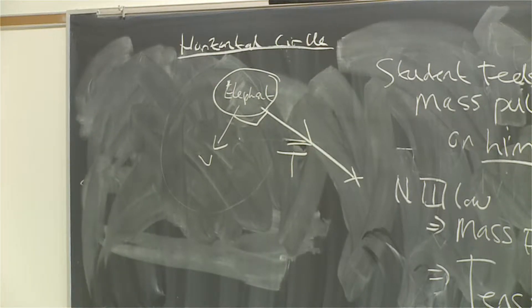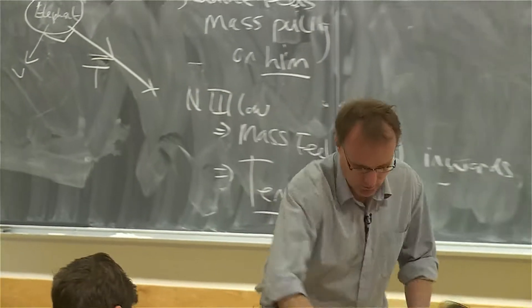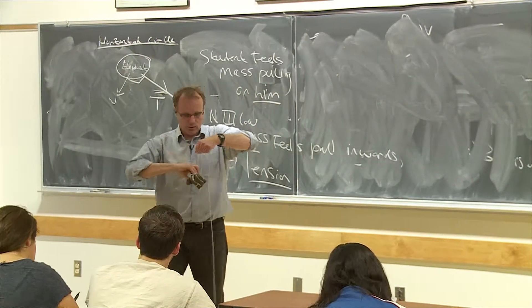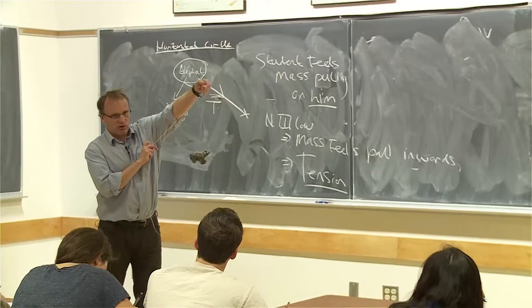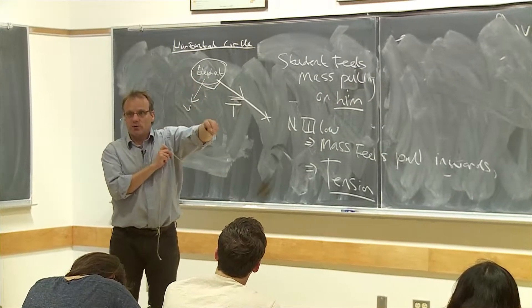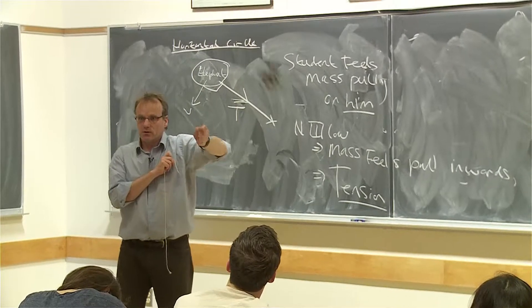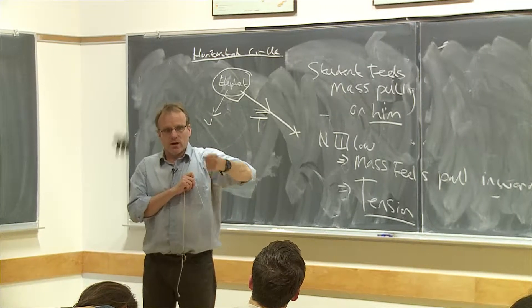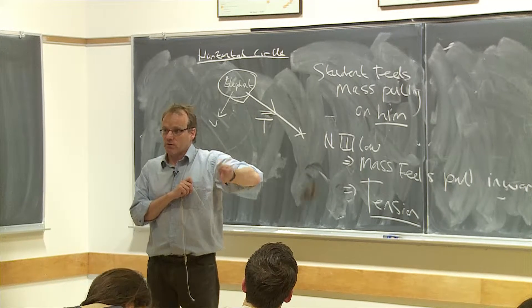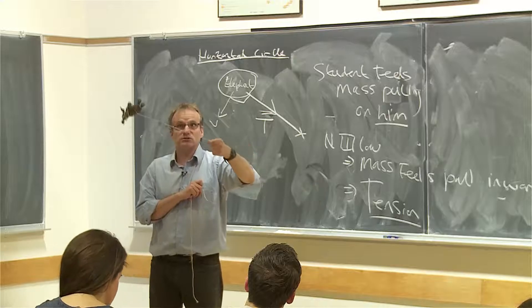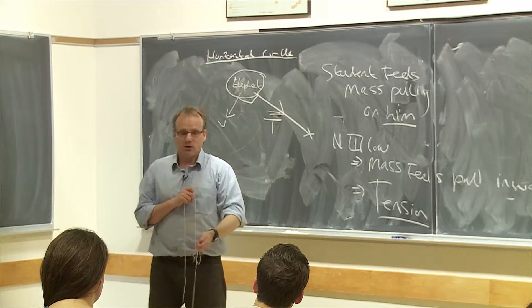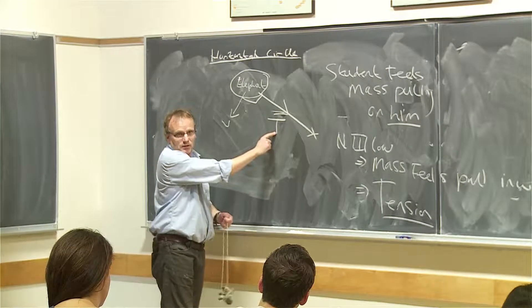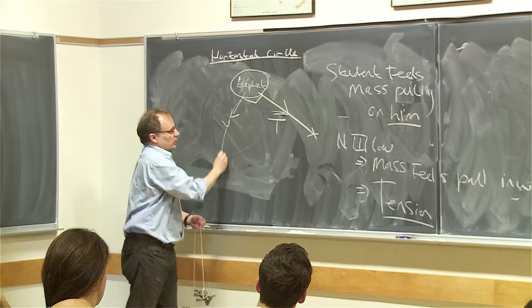So the elephant itself will not go in a circle unless I start it up. Once I start it up, the elephant can only continue to go in a circle if there's a tension. Once there's no tension, it doesn't work anymore. You have to have this tension to make the object move in a circle.